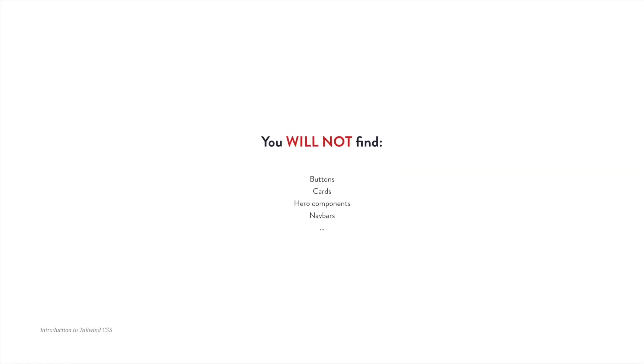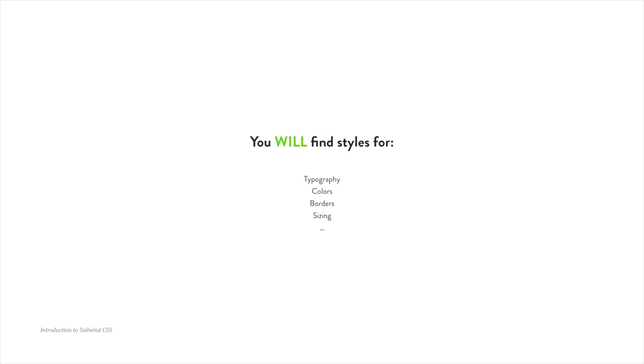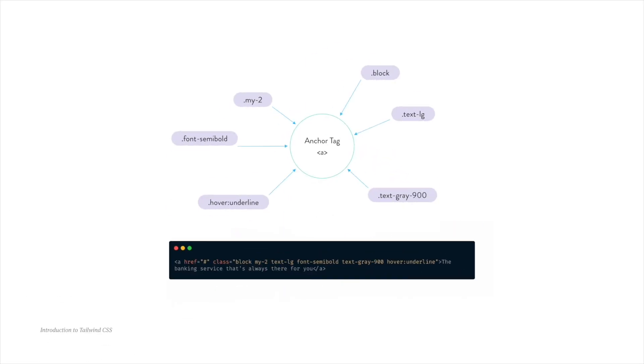First things first, what is Tailwind CSS? In short, it's a CSS framework, but it's different from the CSS frameworks you might have used before, in the sense that it only gives you the low-level styles. With Tailwind, you won't find any of those complicated components that you usually find in Bootstrap or Foundation, like hero components or cards or stuff like that. Instead, you get classes for text alignment, border styling, colors, sizing, and so on. And by using these classes, you can create any layout or component you want.